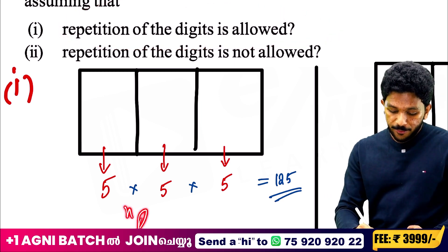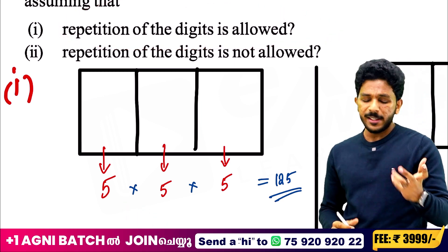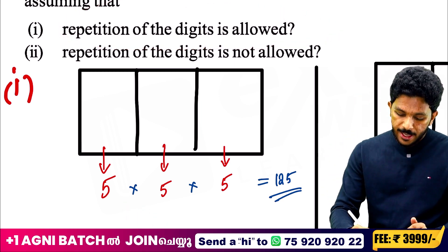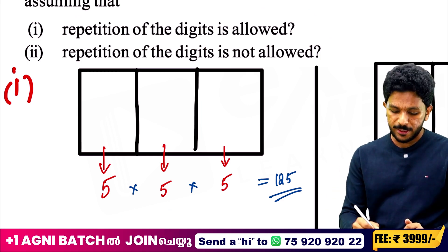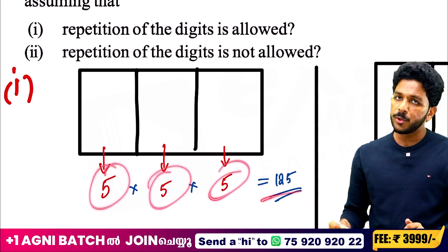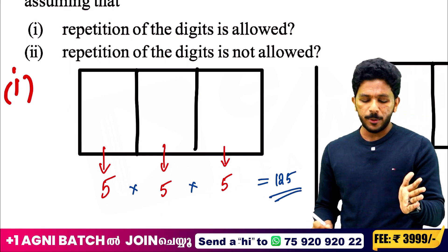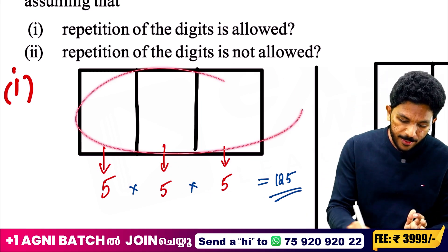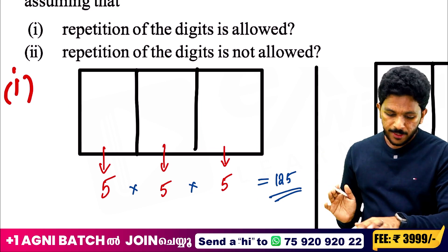We can also go to the NPR formula — that is a special case. There is a formula: n raised to R. This is simple and logical. This is the repetition-allowed approach.